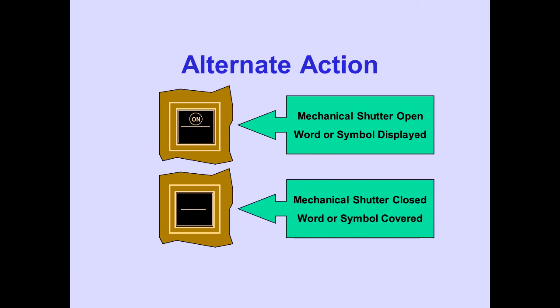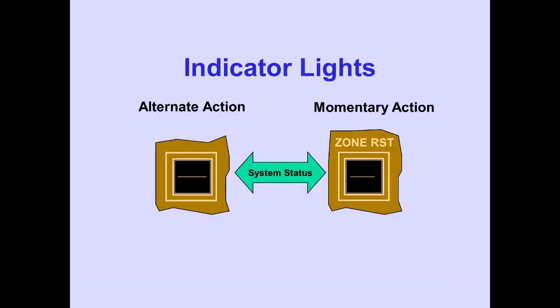Momentary action switches have no mechanical shutter. Both alternate action and momentary action switches have integral indicator lights. Indicator lights illuminate to indicate system status. Individual switches and indicator lights are discussed in their respective module.